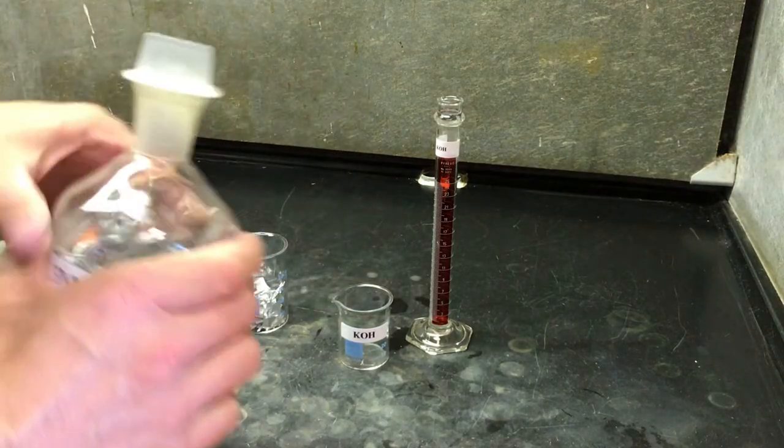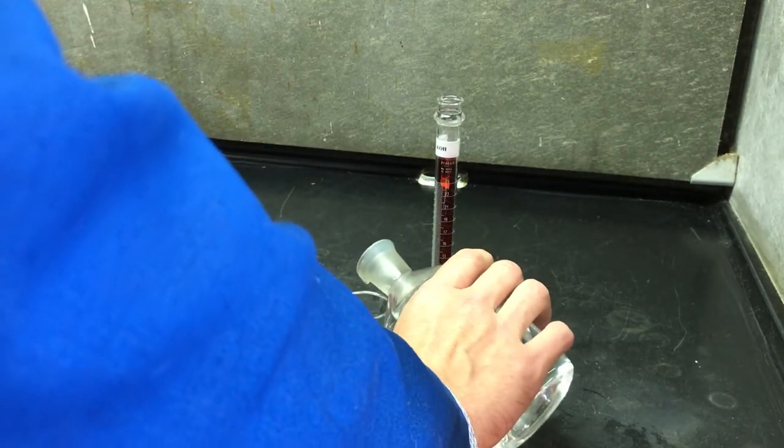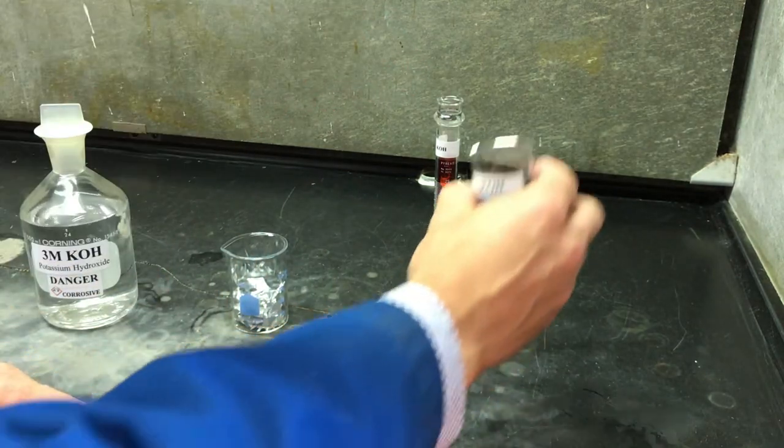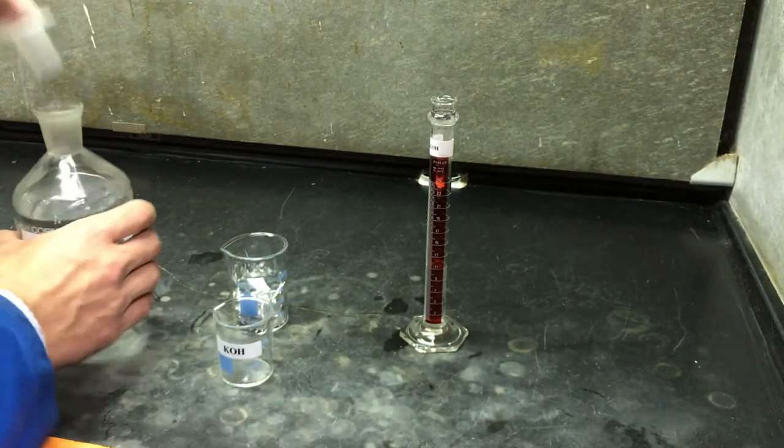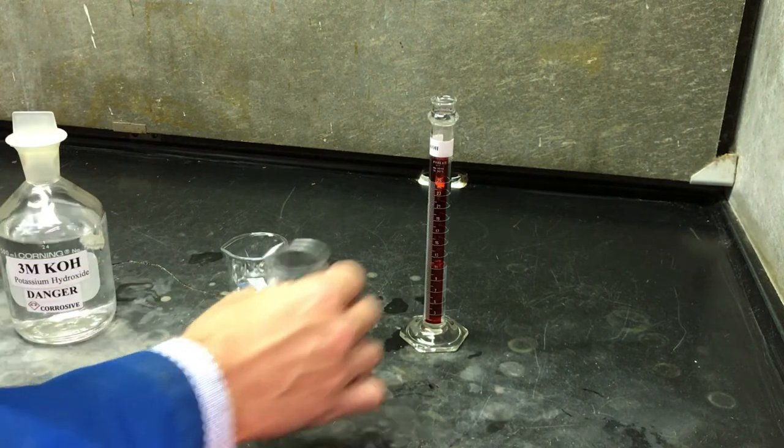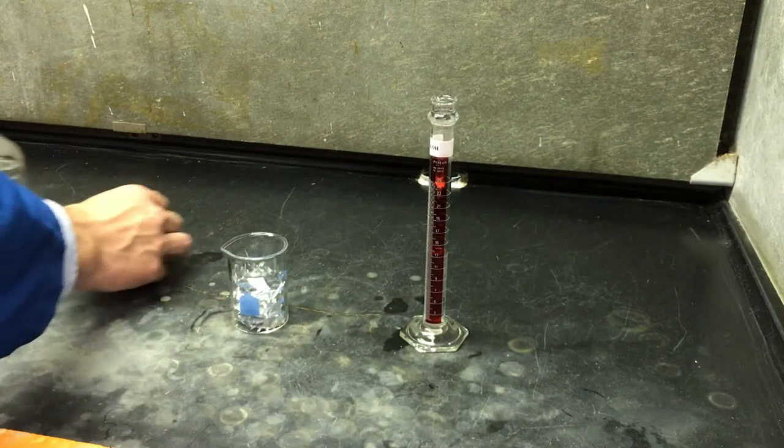We'll use 3 molar potassium hydroxide to ionize our metal. KOH is caustic, extreme care should be exercised. We'll target 13.0 mils, plus or minus 0.5 mils. When working with such a caustic chemical, it's best practice to use a secondary transfer vessel such as a beaker to eliminate undue risk. Here we've measured 13.0 mils.